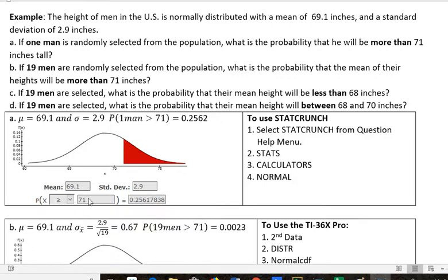And for the first one, we're interested in 71 as a person, that possibility that they're taller than 71 inches. And that turns out to be about 26% of the time. Now rounded to four decimal places is 0.2562. That's the probability that one man would be greater than 71 inches tall.